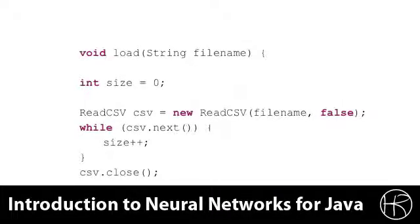We begin by calling the load routine. The load routine accepts a file name and it's going to actually read the CSV file. We actually read it twice. First to find out how many lines there are in the CSV file so that we can properly allocate the array to hold this file. And that's what you see here. We use the ReadCSV class which was provided by the download for both the book and the class.